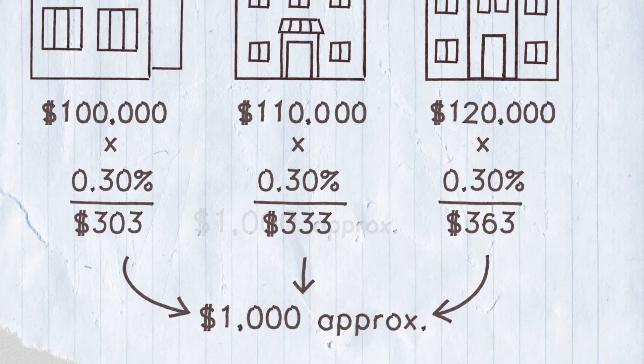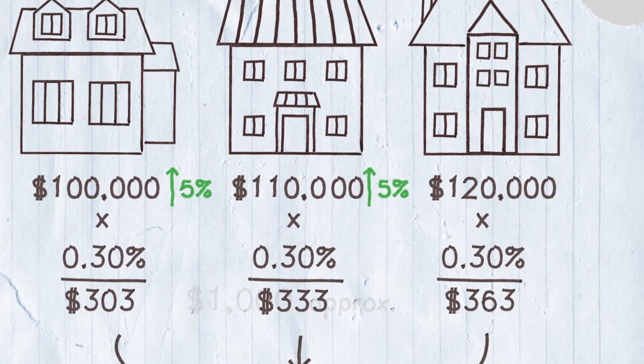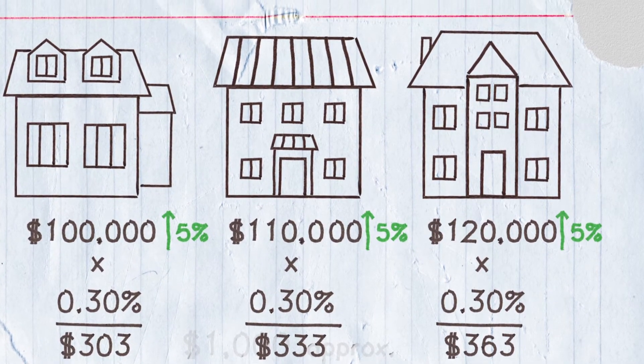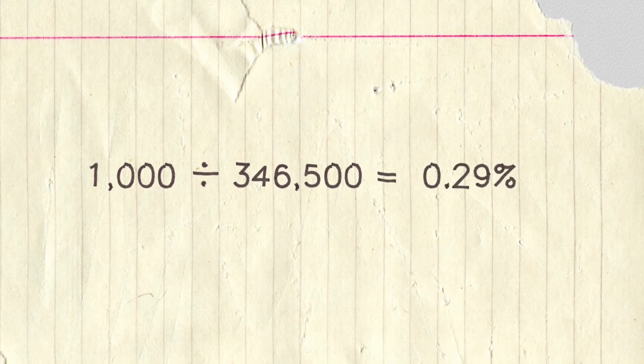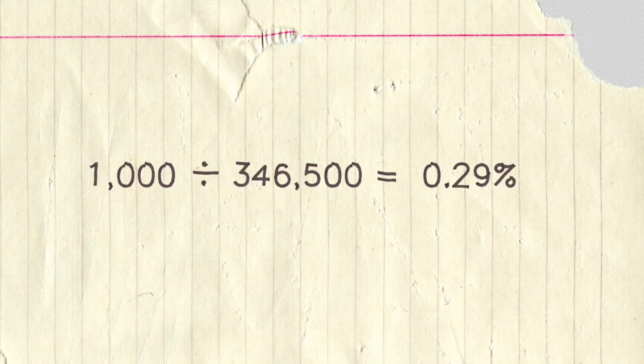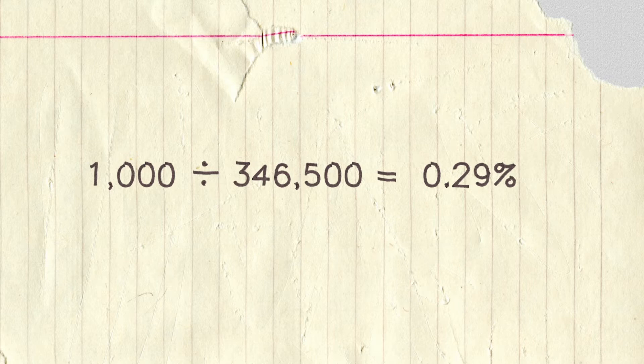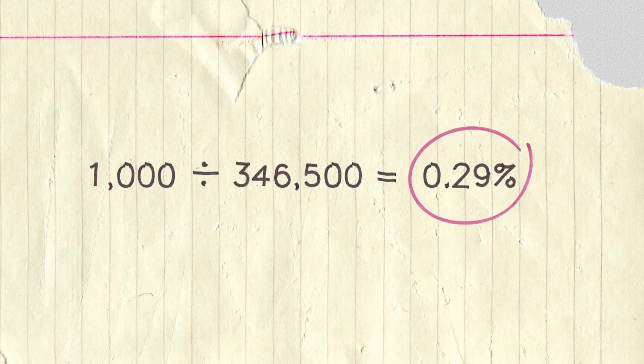Every four years, the houses are reassessed. Let's say all three properties have gone up equally in value. If we go back to our calculation, the total cost of services hasn't changed, but the total property value has increased. When this happens, there will be a decrease in the tax rate.